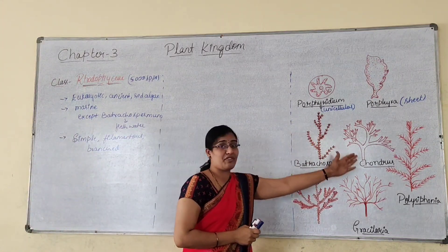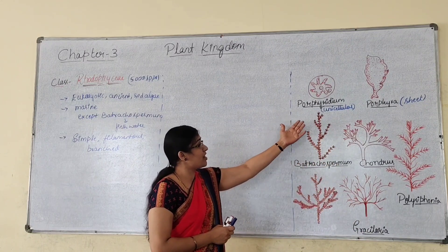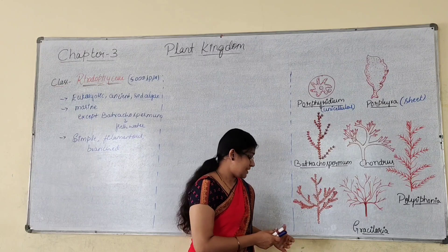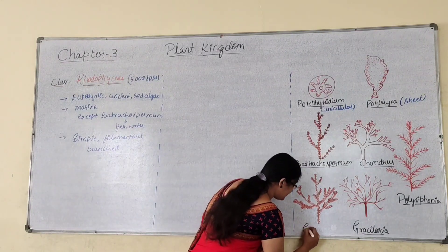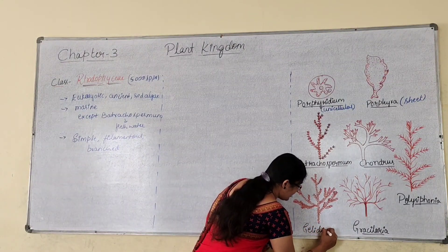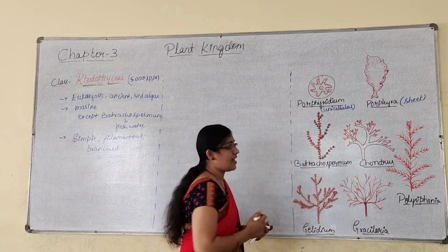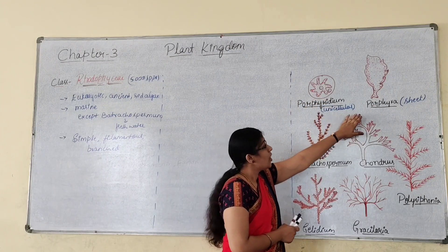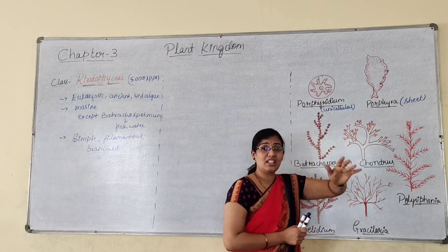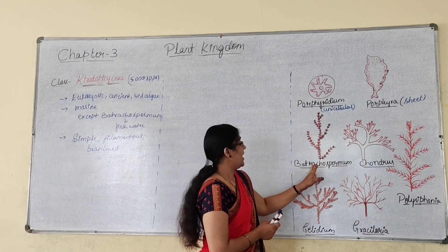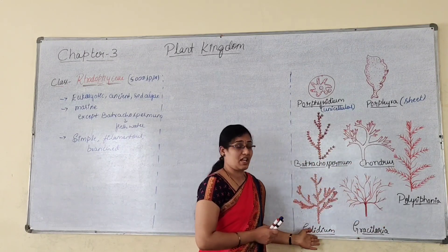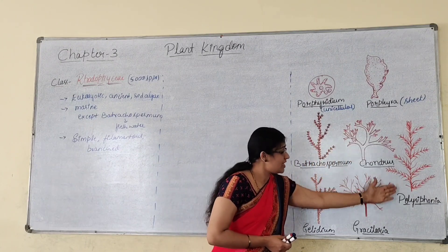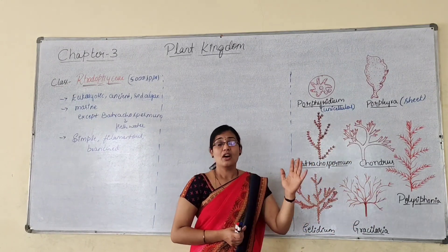You can see different types of red algae. Rhodophycean members include Porphyridium, Porphyra, Batrachospermum, Chondrus, Gelidium, Grateloupia, and Polysiphonia. Porphyridium is a unicellular red alga. Porphyra is a sheath-like alga — the body is somewhat sheath-like. These others are all branched algae. Batrachospermum is the freshwater form.